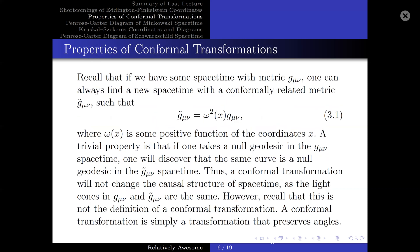Before we can effectively utilize Kruskal-Szekeres coordinates and draw Penrose-Carter diagrams, we have to recall some properties of conformal transformations. Recall that if we have some spacetime with metric g_μν, one can always find a new spacetime with a conformally related metric g̃_μν such that they are related by g̃_μν = Ω² g_μν, where Ω is some positive function of the coordinates x. A trivial property is that if one takes a null geodesic in the g_μν spacetime, one will find the same curve is a null geodesic in the g̃_μν spacetime. Thus, a conformal transformation will not change the causal structure of spacetime, as the light cones in g_μν and g̃_μν are the same.